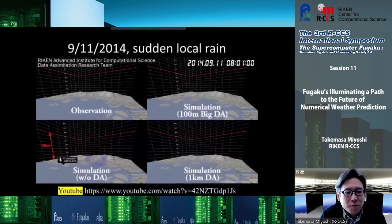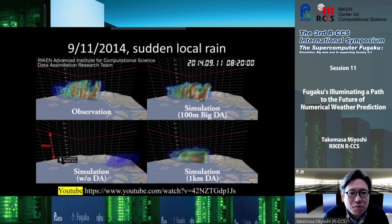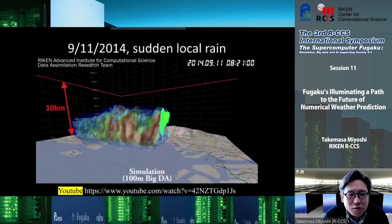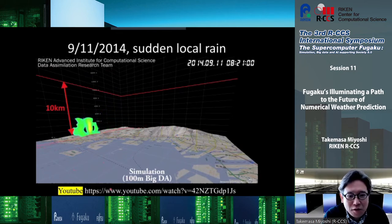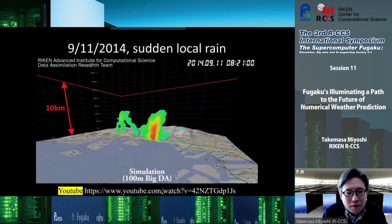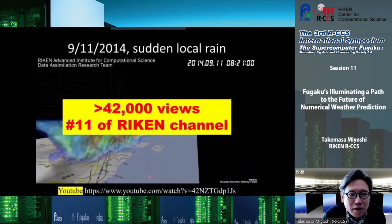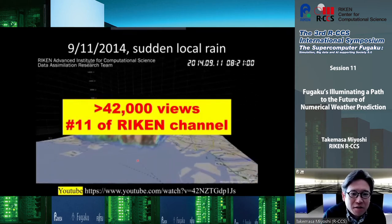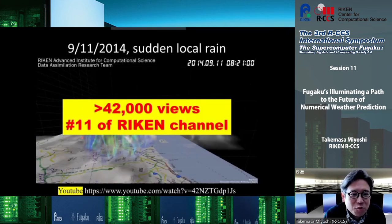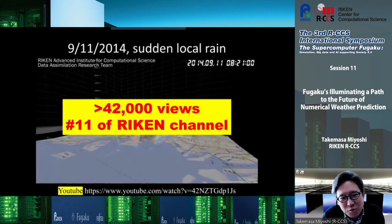We got very successful results, but we spent about three years for the initial development. The top left is the observation and the top right is what we developed on the computer — we assimilate this observation very well, producing a very fine structure of this heavy rain system. This movie is available on YouTube and has more than 42,000 views. It is included as a Riken Channel content and has ranked number 11 among several thousand Riken Channel contents.